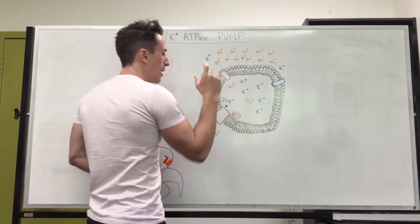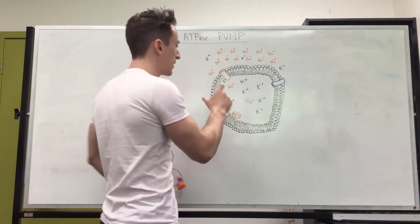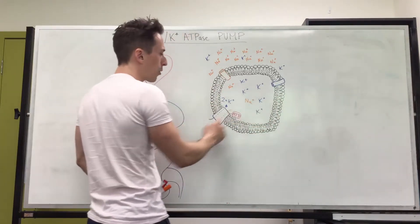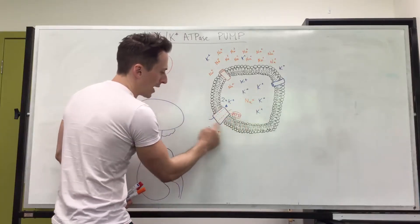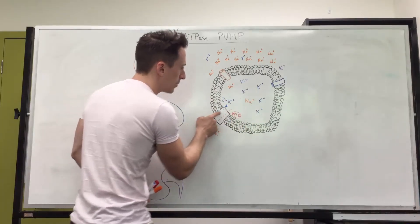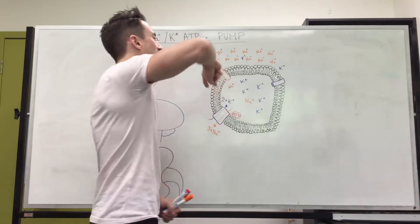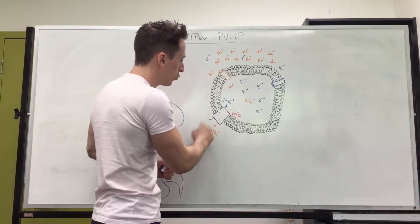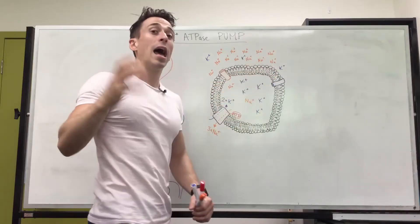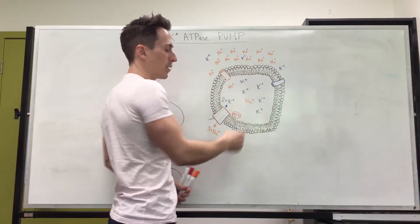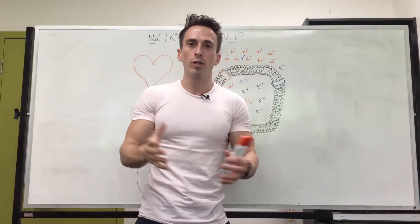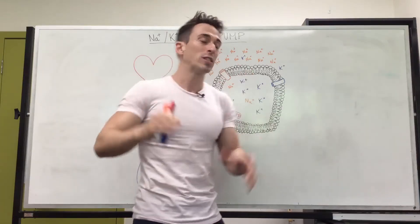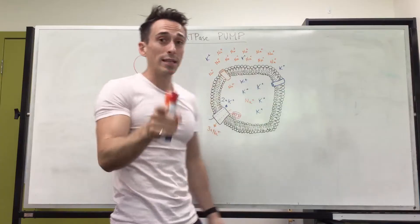Embedded in the membrane of your cells is a pump that uses ATP as energy to throw three sodium out of the cell and two potassium into the cell. As this pump is working, it starts to create a gradient where there's a huge amount of sodium building up outside and a huge amount of potassium building up inside. So why do our cells do this? Why do we dedicate so much energy in our body to this pump to establish this gradient? Well let's have a look.